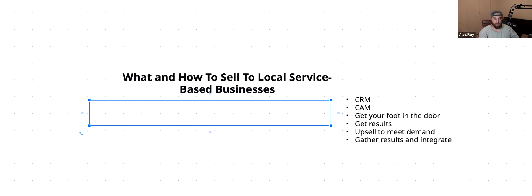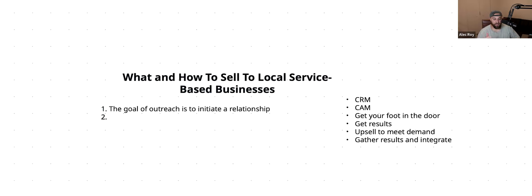Number one: the goal of outreach is to initiate a relationship. If you take any other approach, you're not only going to do it wrong, but you'll mess up the gray areas. I could give you a thousand scenarios to prepare for and it will never cover every scenario. We cannot predict human behavior — even economists, psychologists, and philosophers can't do that with 100% accuracy.